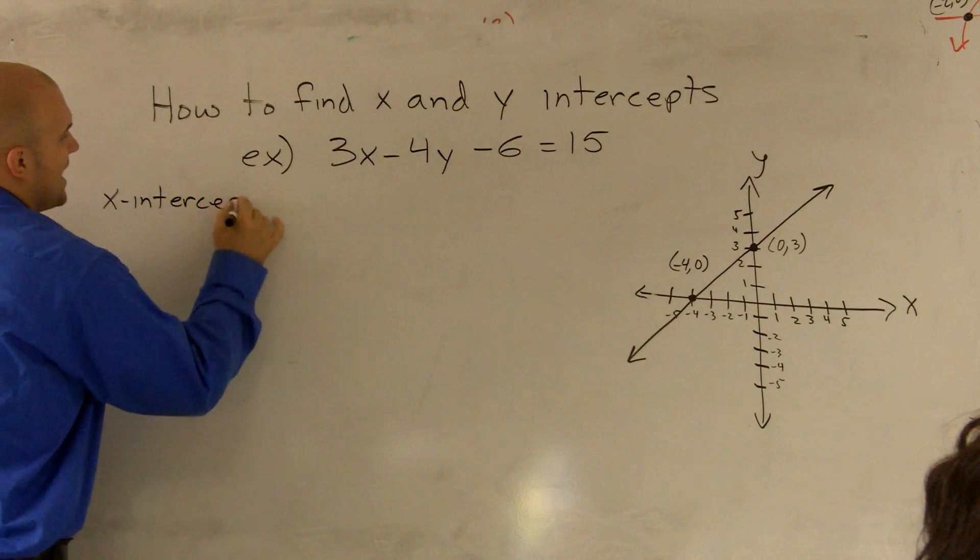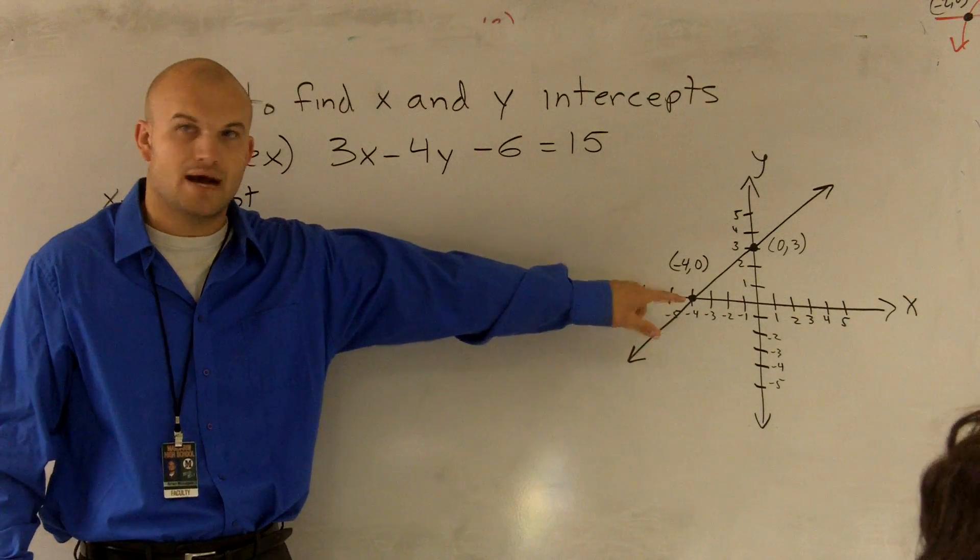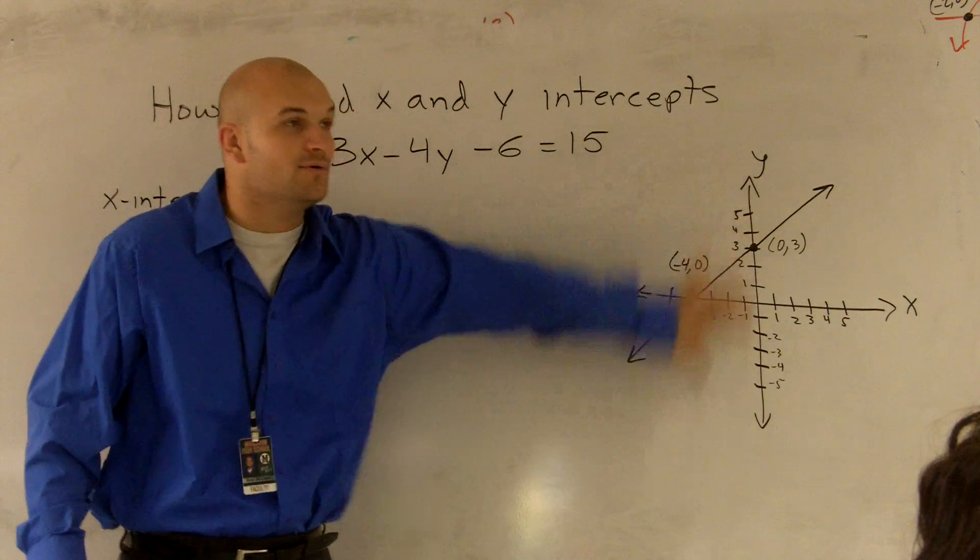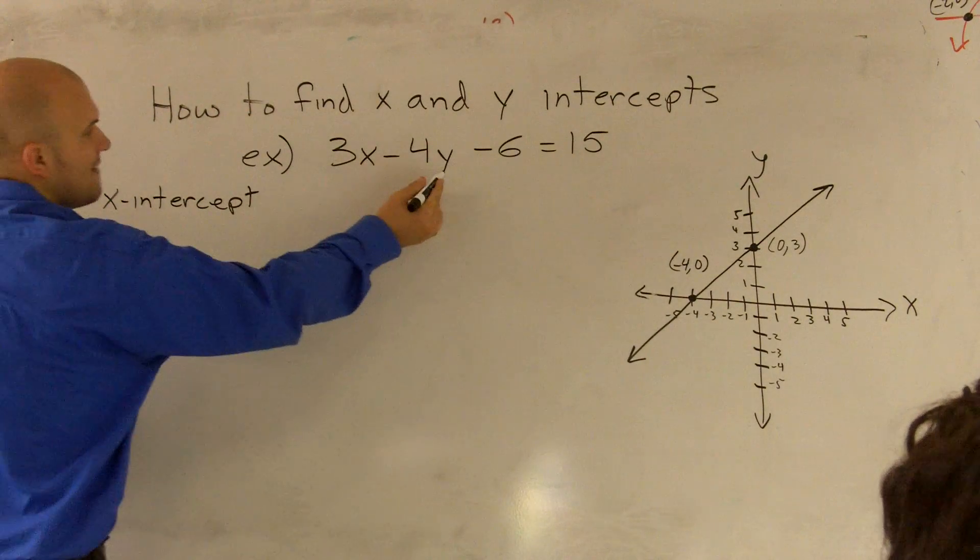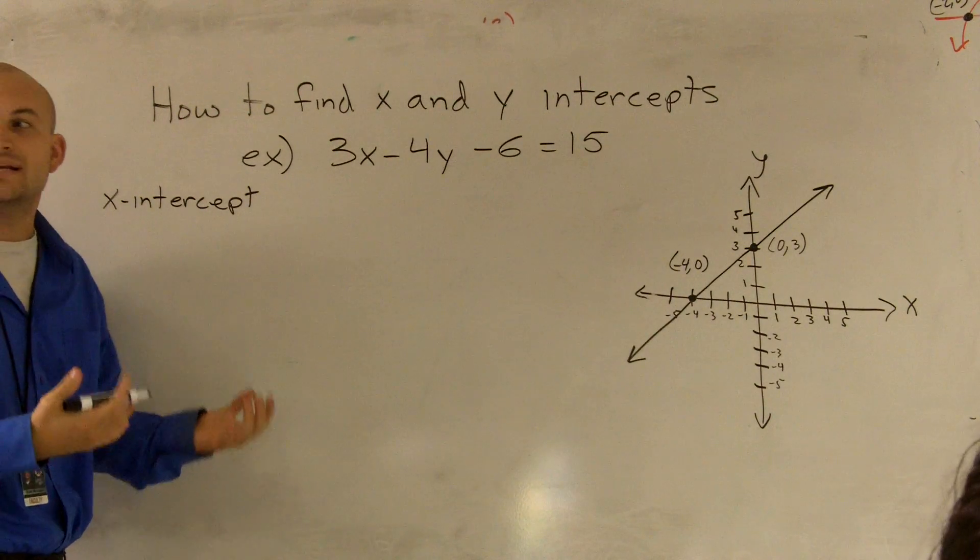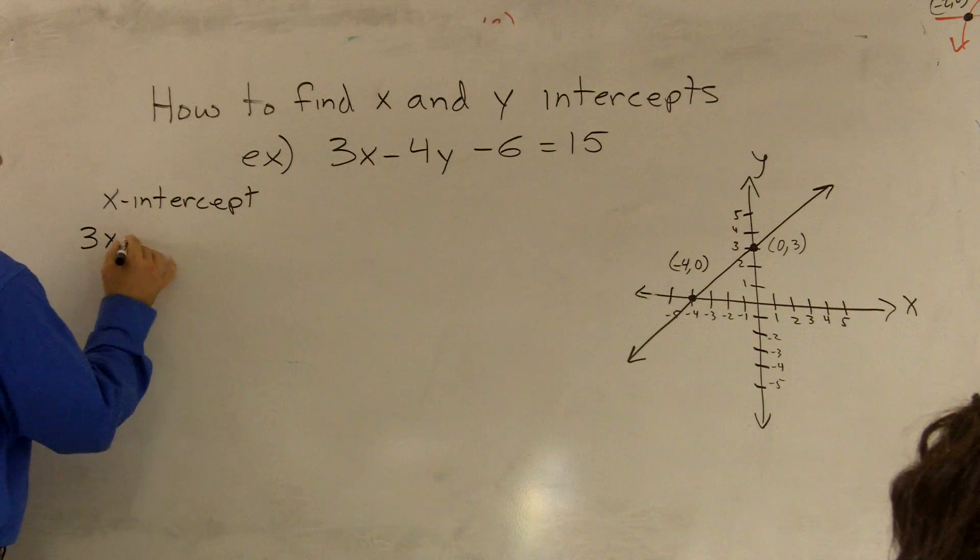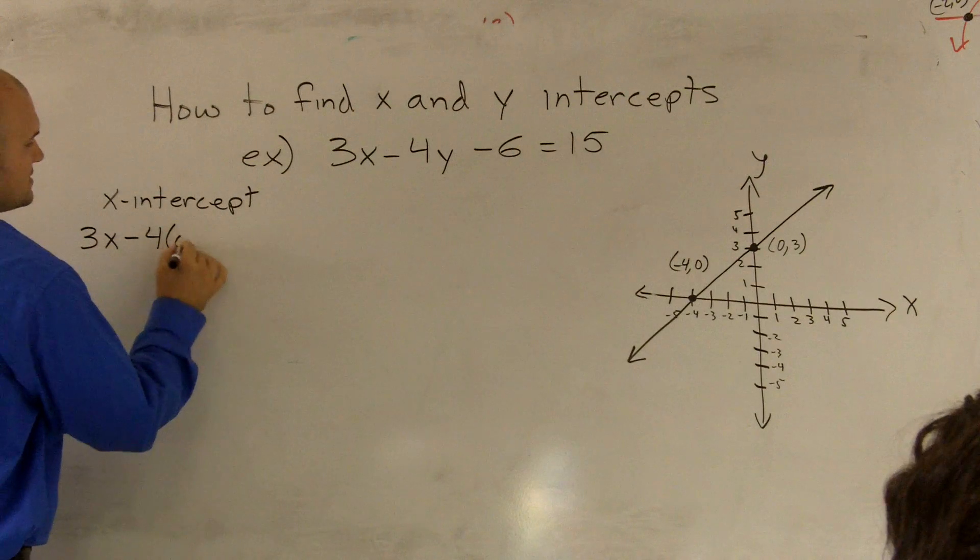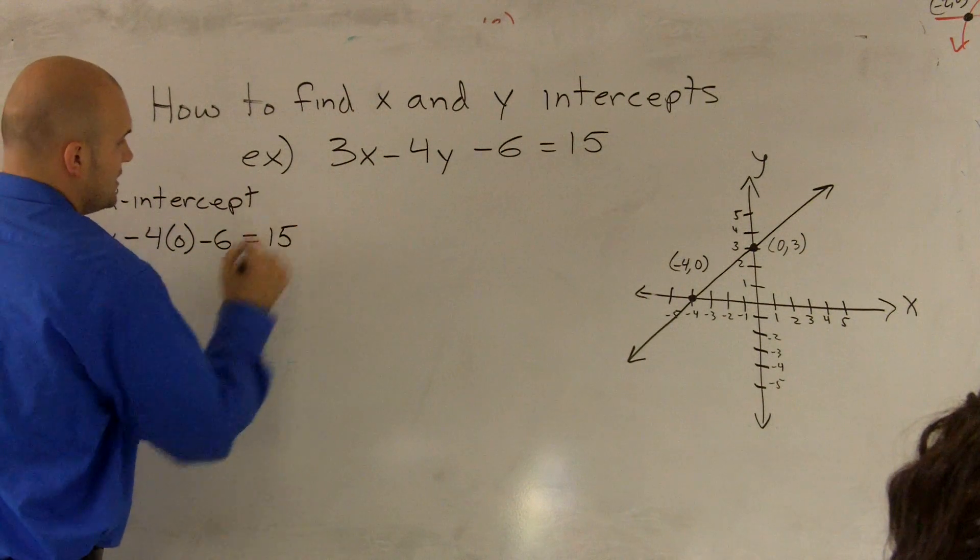If I want to find the x-intercept, I know that my y-value is equal to 0. I don't have to know what this graph looks like. So I'm going to plug in a 0 for y. So I have 3x minus 4 times 0 minus 6 equals 15.